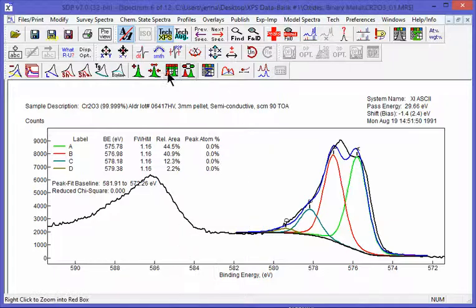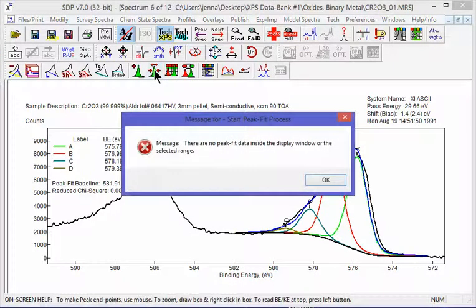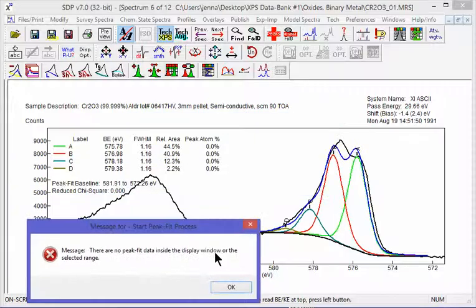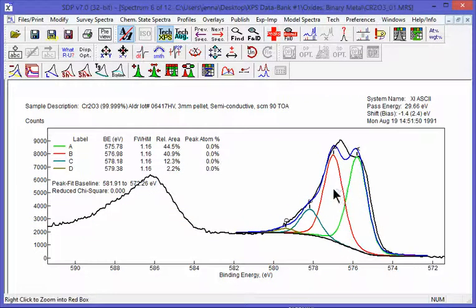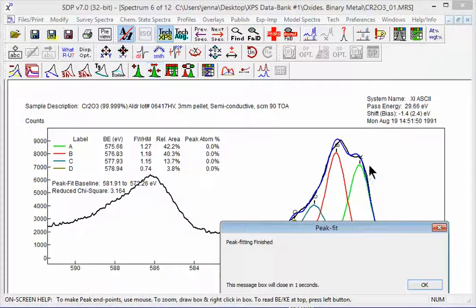So let's go ahead and do the peak fit iteration. This is a warning that you need to select inside the peak fit itself to activate it, and then we can do the peak fitting.